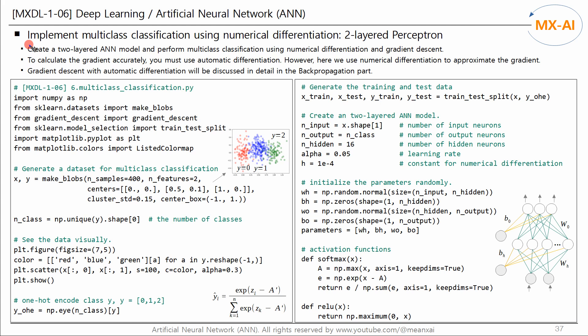Now let's implement a neural network using numerical differentiation. We'll implement a two-layered perceptron to perform multi-class classification, using the gradient descent function created in the previous video. As mentioned previously, to calculate the gradient accurately we need automatic differentiation; however, here we use numerical differentiation to approximate the gradient. We will take a closer look at gradient descent using automatic differentiation in the error backpropagation algorithm later.